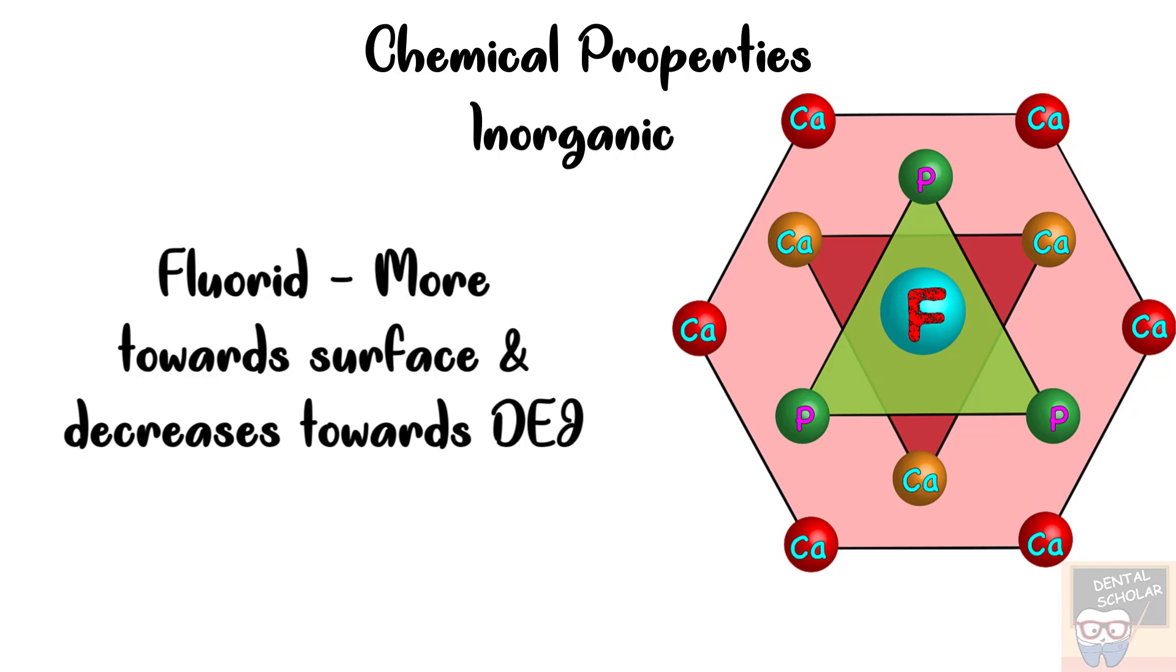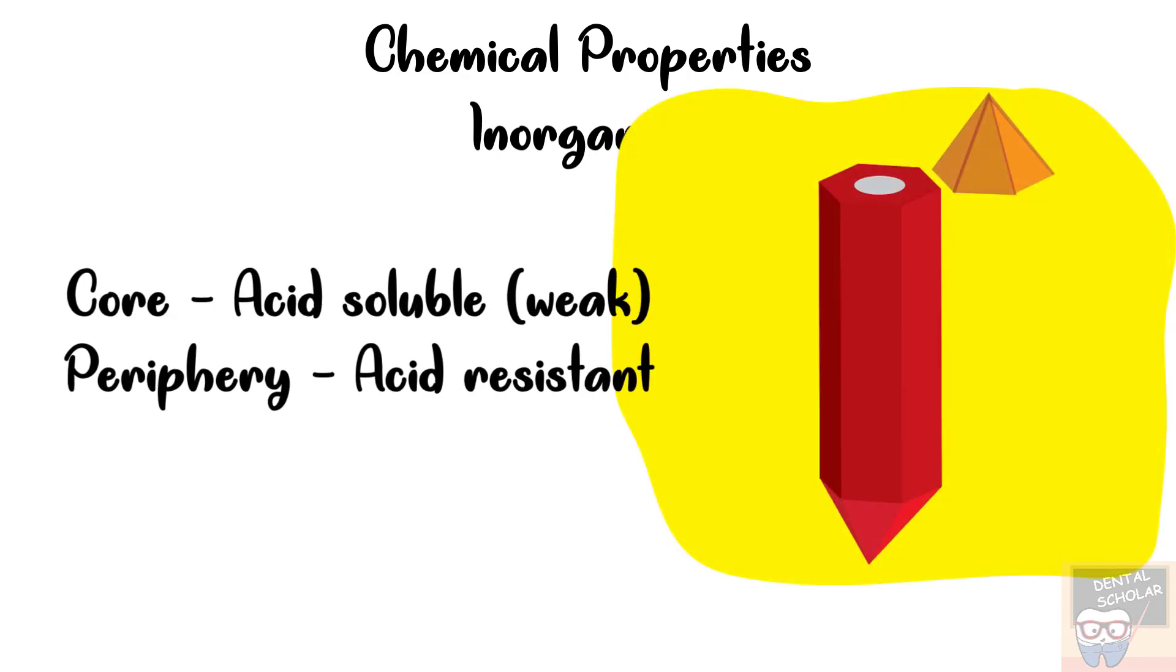Now as I just told you impurities are more concentrated towards the core. The core is more acid soluble or weak and the periphery is acid resistant that is it is more stable.